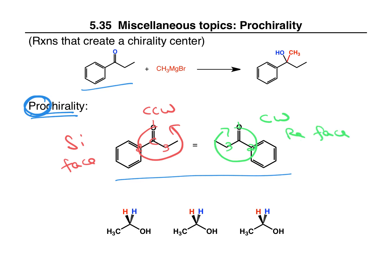So this is a prochiral site. We could talk about a reagent adding to the Si face or adding to the Re face — that's what happens when we have a trigonal planar site, we can have a Re face and a Si face.